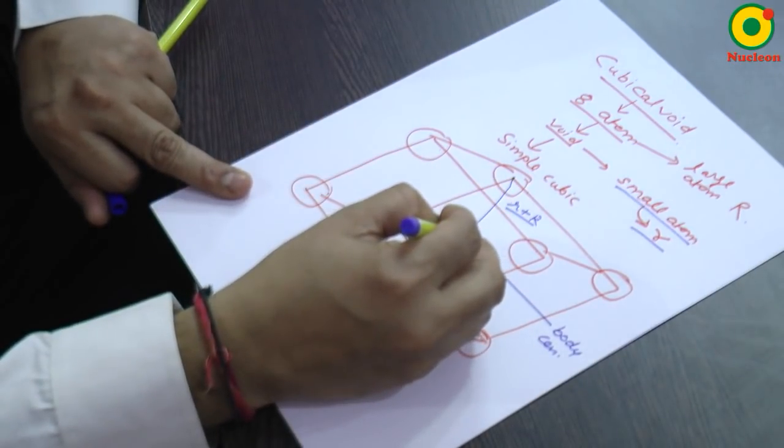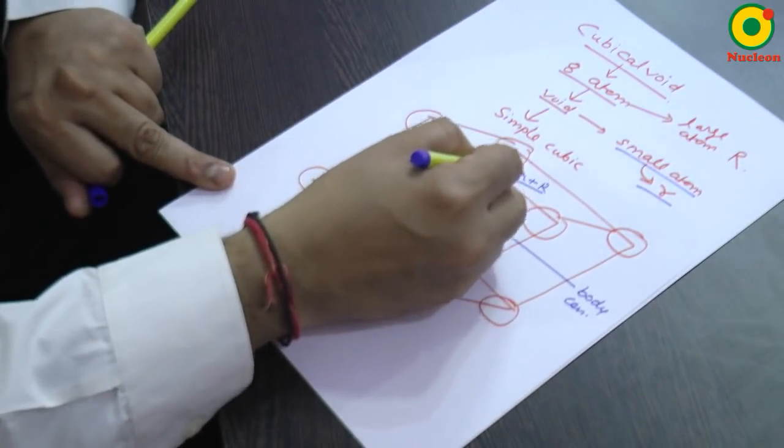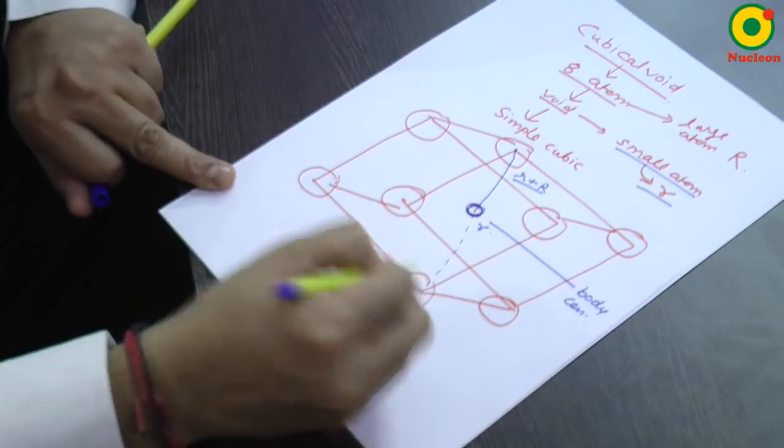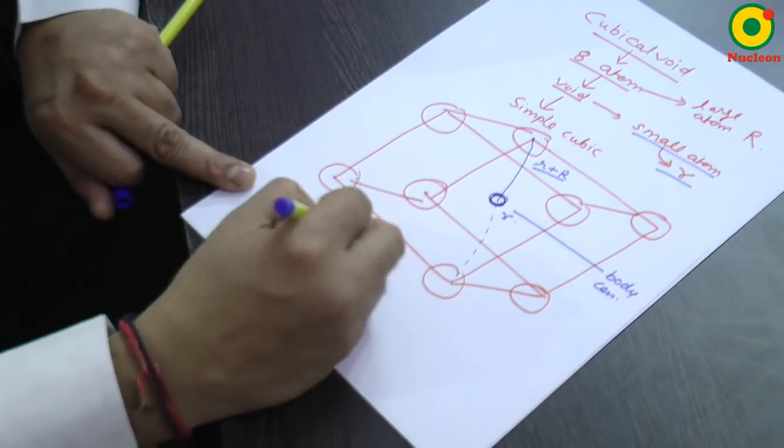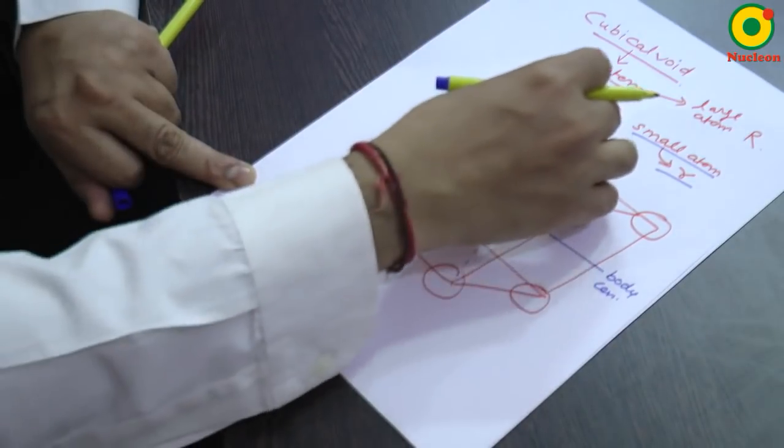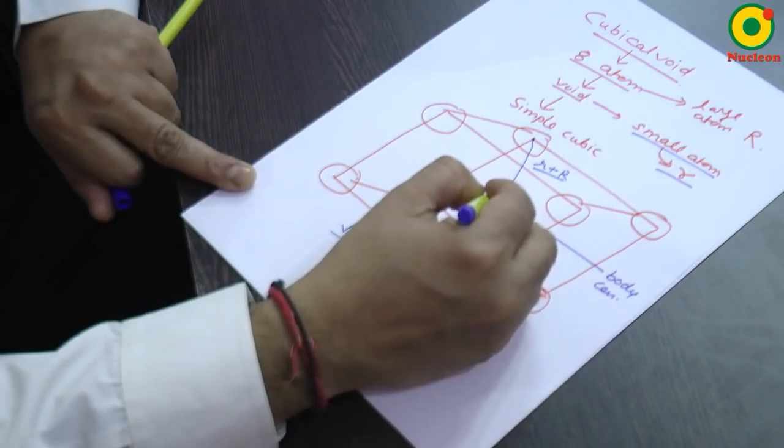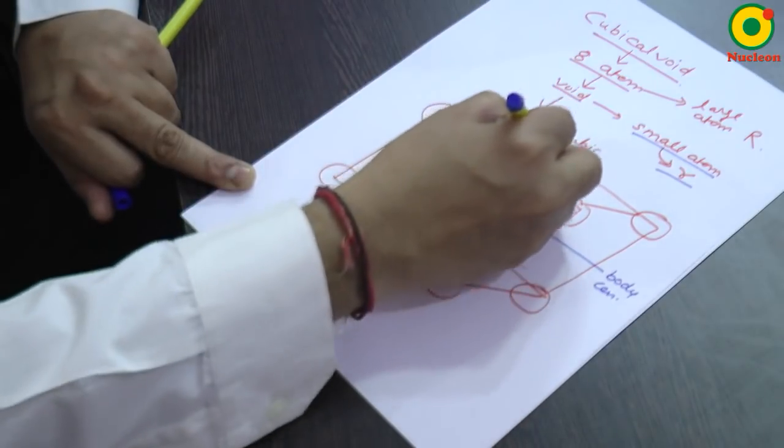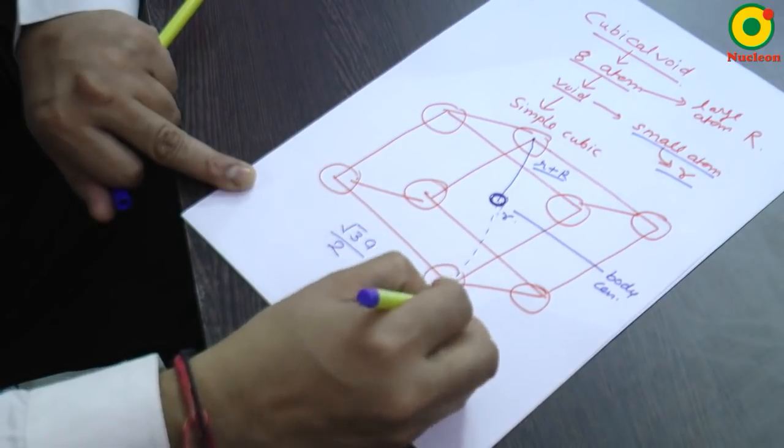Now this small atom is present at the body center. So, if I draw a body diagonal, body diagonal of cube is root three a. So definitely this is present at the half distance. So this distance will be root three a by two is equal to r plus capital R.